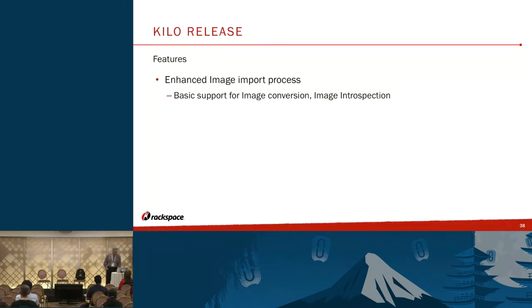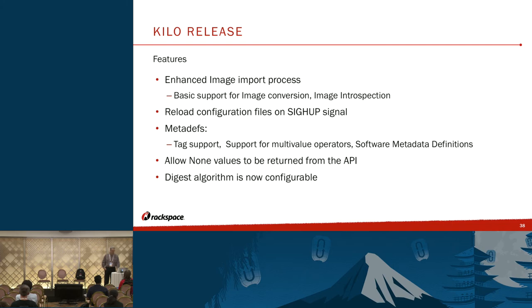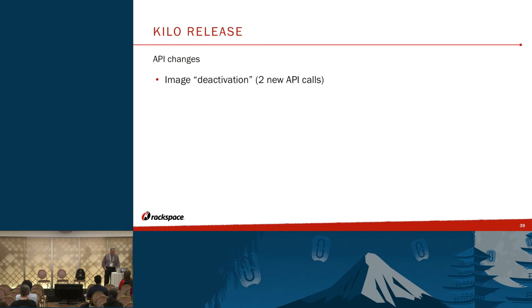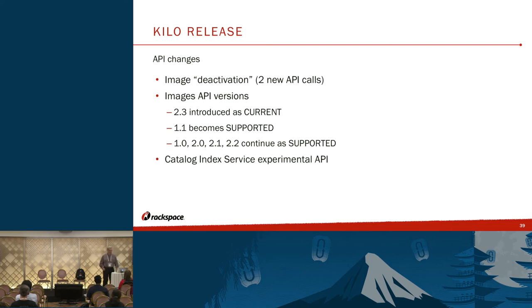That takes us to Kilo. Features include enhancements to the image import process — basic support for image conversion and image introspection — reload configurations on signal, MetaDefs got tag support and support for multi-value operators and software metadata definitions, change to allow none values to be returned from the API, and the digest algorithm is configurable. With Kilo's API changes, image deactivation was introduced so an admin could prevent use of an image for investigation. The images API version got bumped to 2.3, making 1.1 supported rather than current. And there's the catalog index service as an experimental API in Kilo.